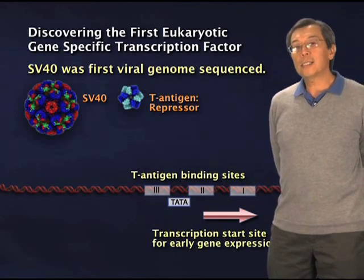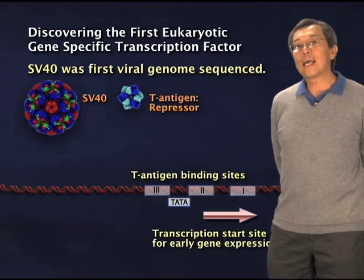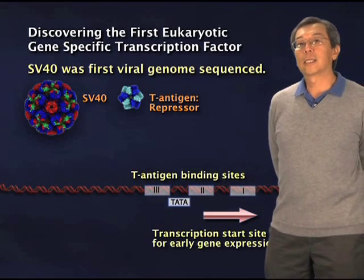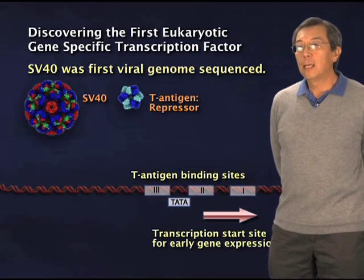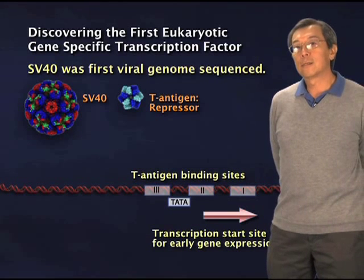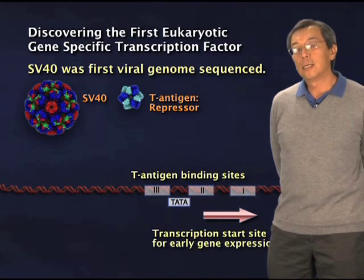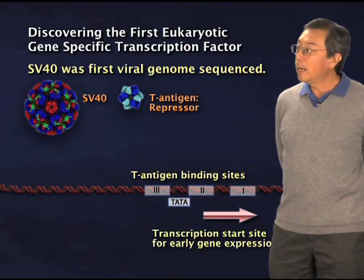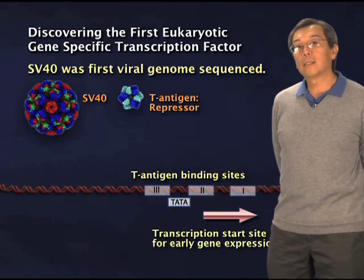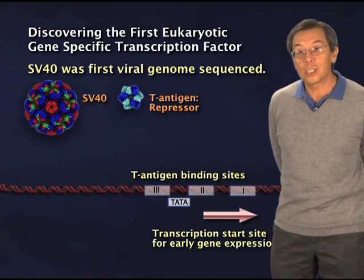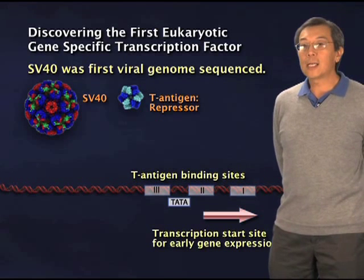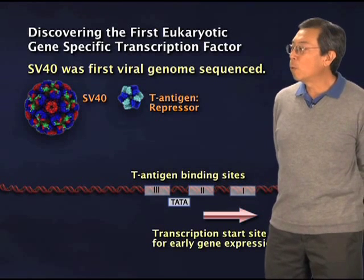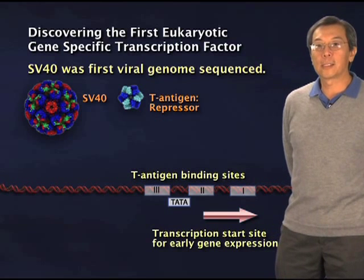We took a lesson from our studies of bacteriophages and decided that to begin to dissect the molecular complexities of the transcription process in animal cells, we should start with viruses. Because we knew that viruses would enter these host cells — these complex cells that we ultimately want to study — and have to use the same molecular machinery to transcribe their genes as the host mammalian cell would do. So this was a way to look through a molecular window into a complex system and try to simplify it.